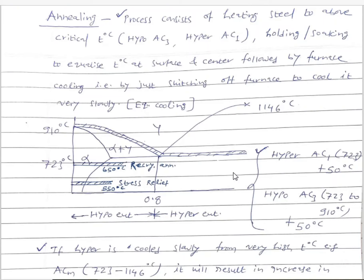The reason is if hyper-eutectoid steels are annealed from just above the upper critical temperature — ACM, which ranges from 723 to 1146, the temperature above which 100% austenite is obtained — and if the steel is cooled very slowly from this temperature to room temperature, as we have seen in the iron-iron carbide diagram, it will result in the formation of a hard and brittle network of cementite.